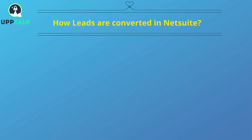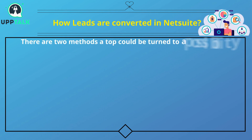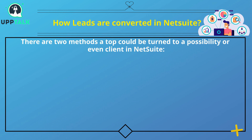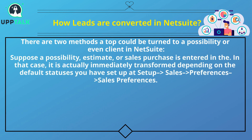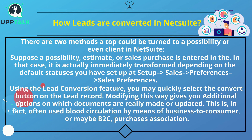How are leads converted in NetSuite? There are two methods a lead can be converted to a prospect or customer in NetSuite. First, if an opportunity, quote, or sales order is entered, the lead is automatically converted based on the default statuses set up at Setup, Sales, Preferences, Sales Preferences. Second, using the Lead Conversion feature, you can select the Convert button on the lead record. This method gives additional options on which records are created or updated, and is often used in business-to-consumer, or B2C, sales organizations.